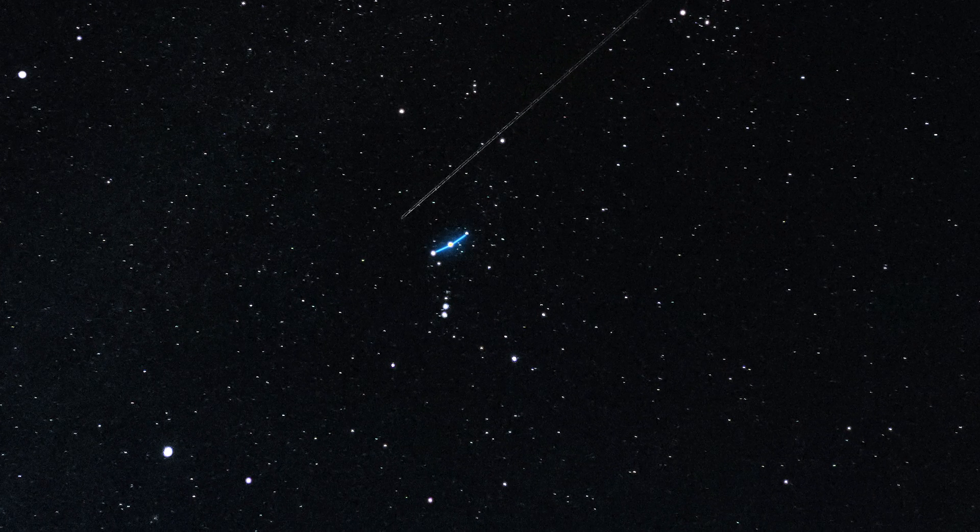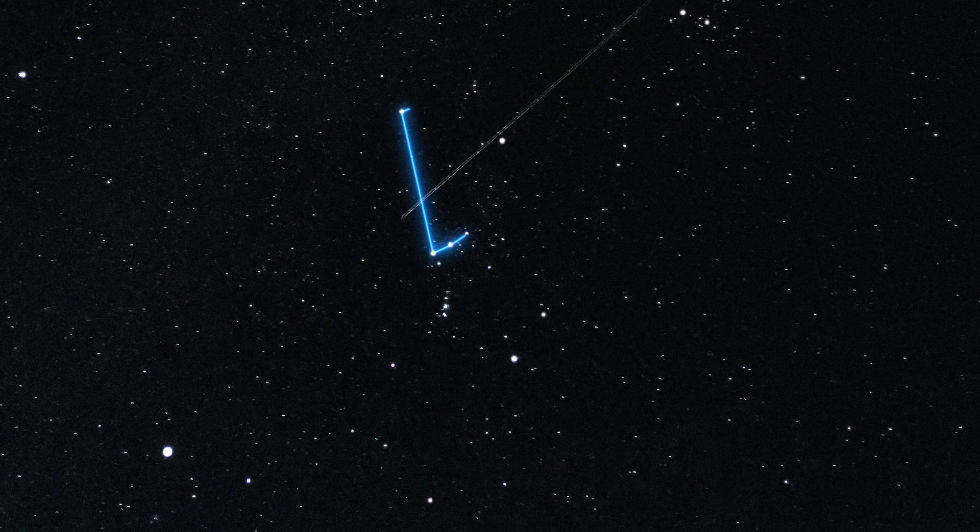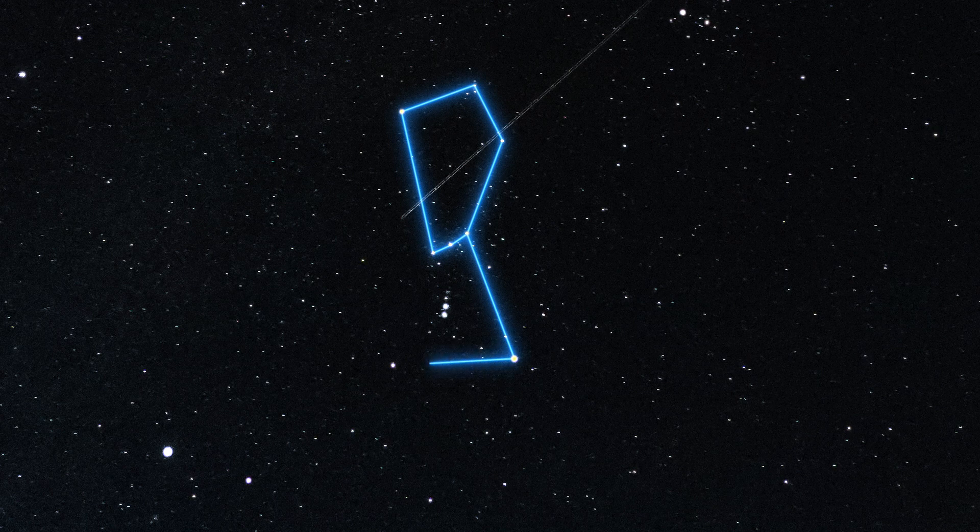Orion's belt. Betelgeuse, the red giant, is his right shoulder, and Rigel, the brightest star in the constellation, forms his left knee.